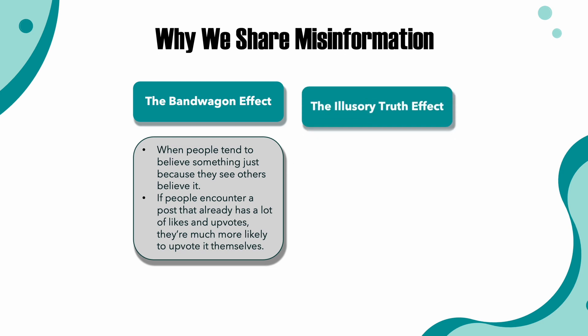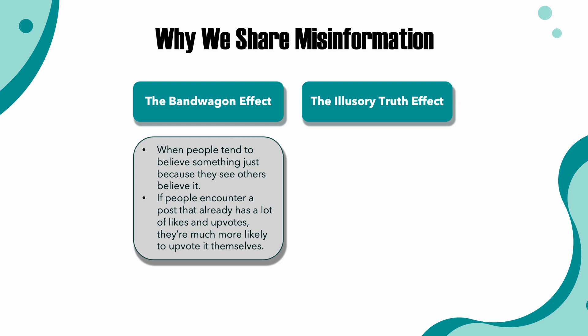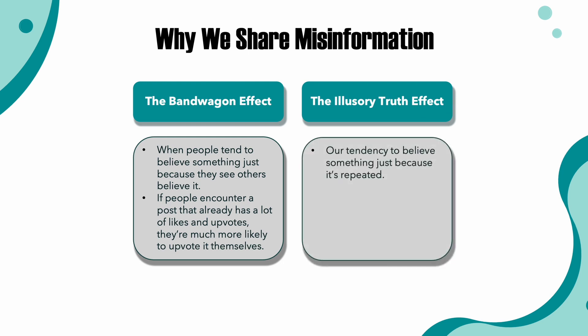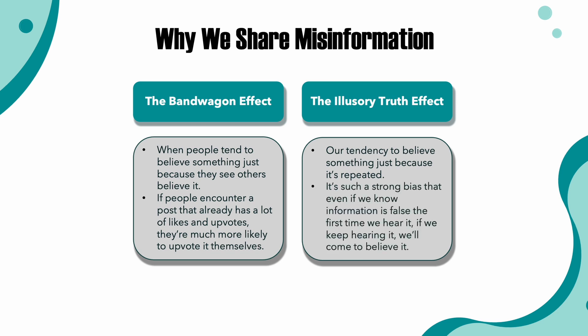Number five: the illusory truth effect. The illusory truth effect is our tendency to believe something just because it's repeated. This is such a strong bias that even if we know a piece of information is false the first time we hear it, if we keep hearing it, we come to believe that it's true and we'll be more likely to share it.